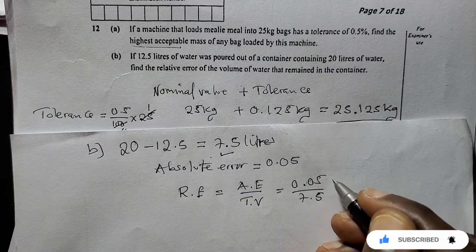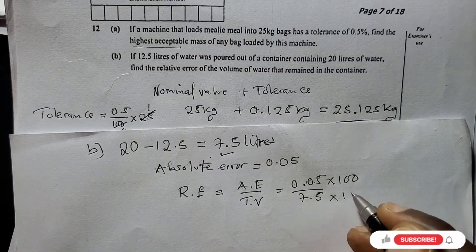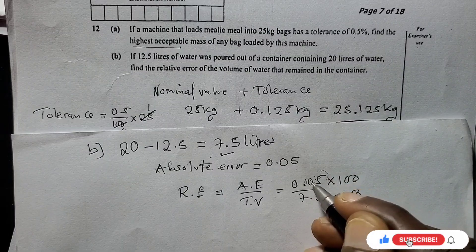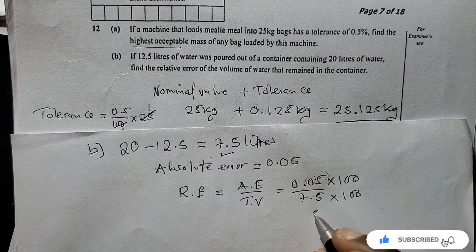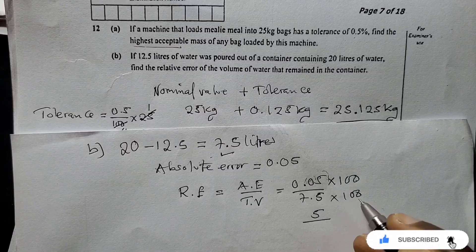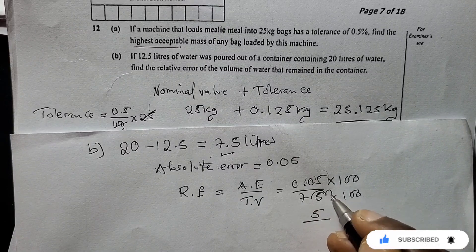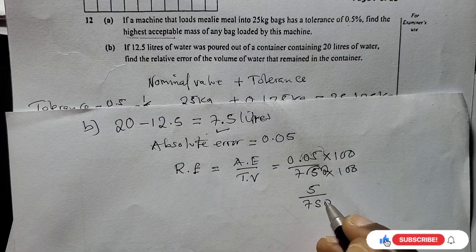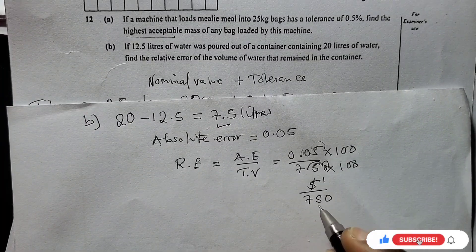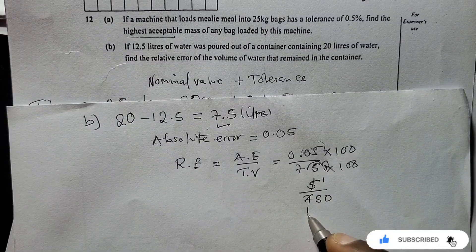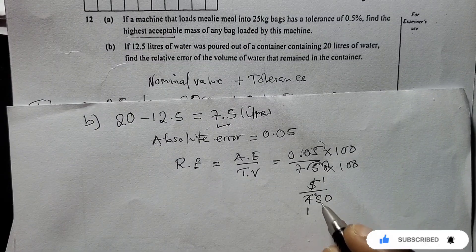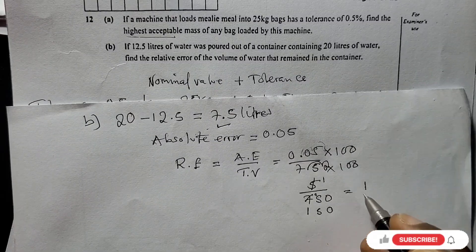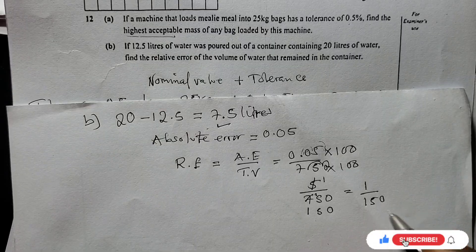We're going to multiply both sides by 100. When you multiply, you remove the decimal to the right and remain with 5 over, then this one moves one, two, so we have 750. 5 into 5 is 1, 5 into 7 is 1 remainder 2, so this becomes 25, then 5 into 25 is 5. We have 1 over 150, and this is the answer.